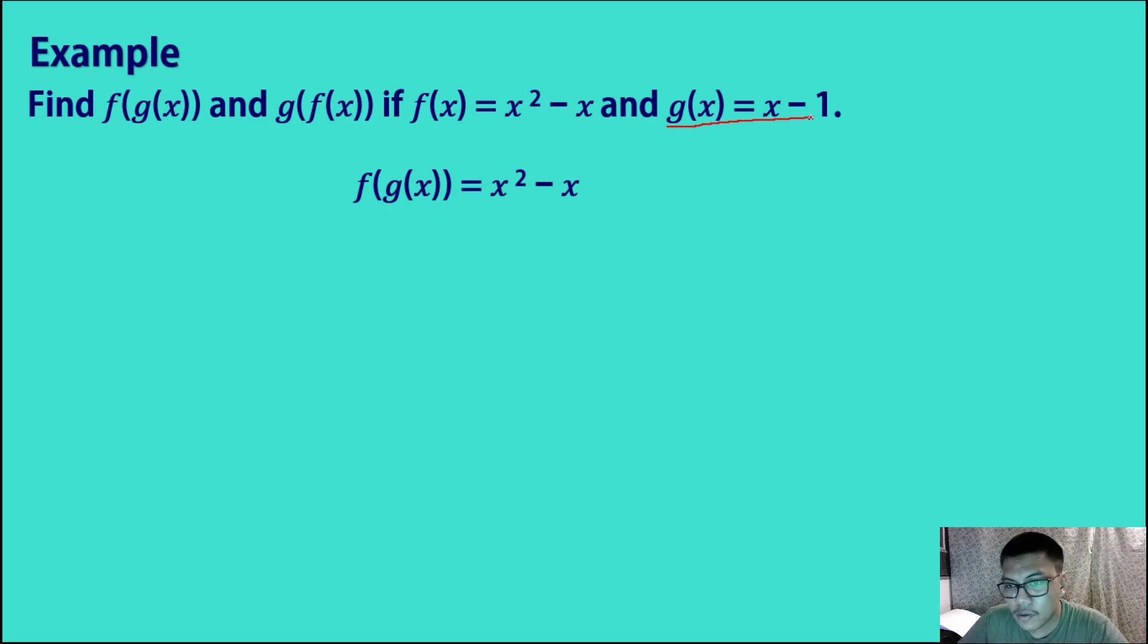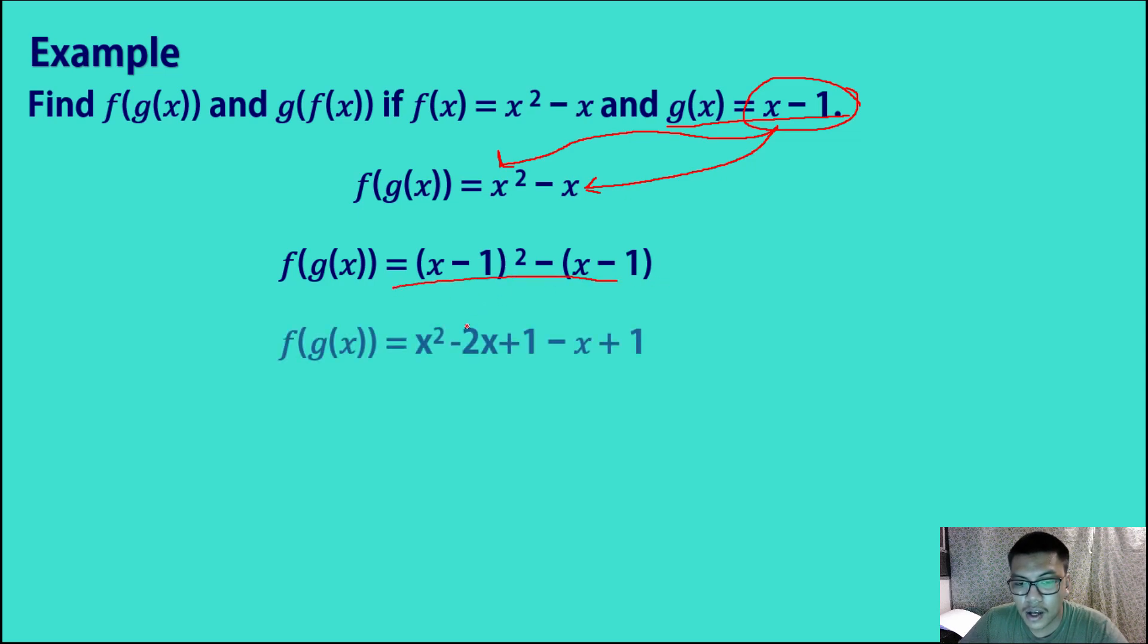So yung value ni g of x, which is x minus 1, ipapasok lang natin dito sa mga x ni f of x. So x, we have (x minus 1) squared minus x will be equal to (x minus 1). So simplifying these two terms, we have, so we have a square here. So we have x squared minus 2x plus 1. I-expand lang natin ito, ano?